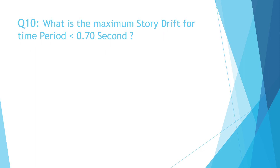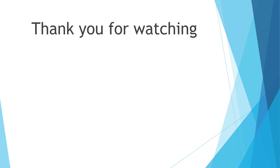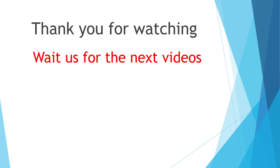Question Number 10: What is the maximum story drift for a time period less than 0.7 seconds? A. 0.02 × height of story, B. 0.025 × height of story, C. 0.002 × height of building, D. None of the above. The correct answer is B. 0.025 × height of story. Thank you for watching and wait for the next videos.